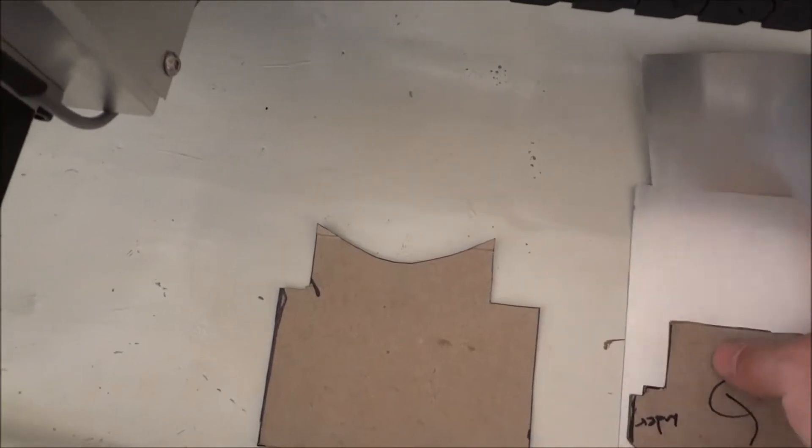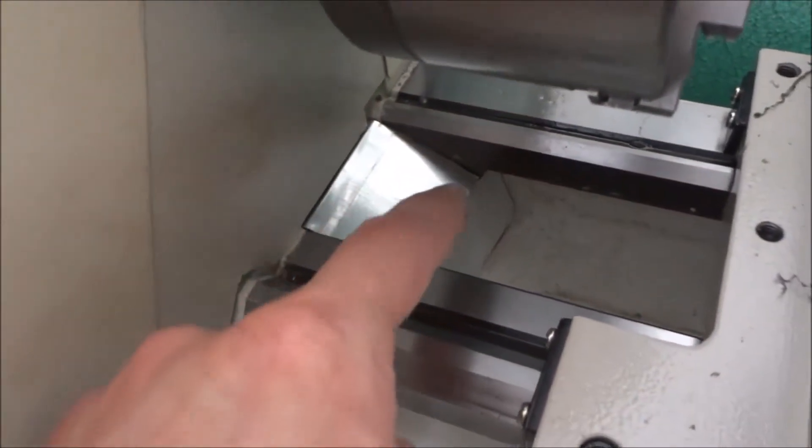I just made some cardboard templates and traced them out on some flashing, then folded it and shaped it. I'm going to put some silicone caulk to hold them in and hopefully close up all the gaps. There was a big hole in the bottom here similar to the tail end.